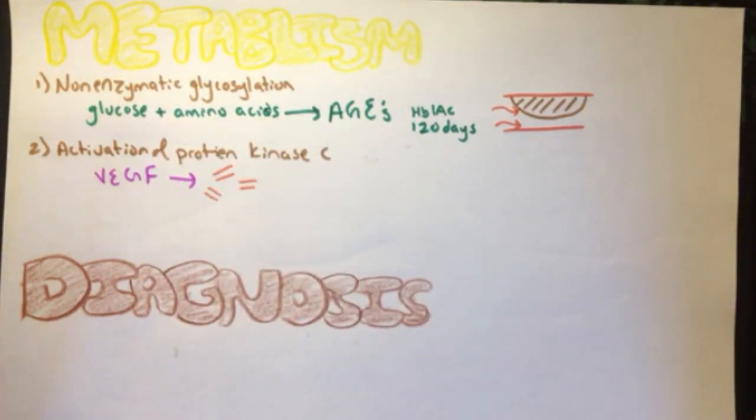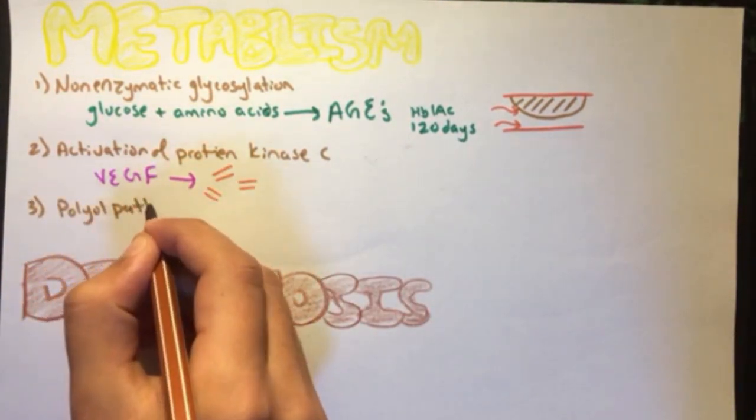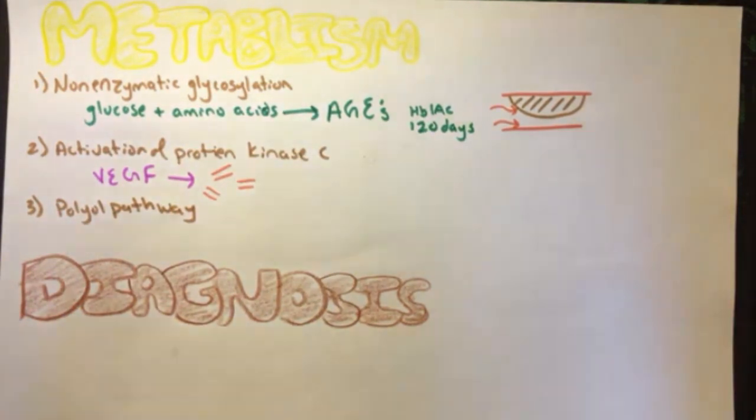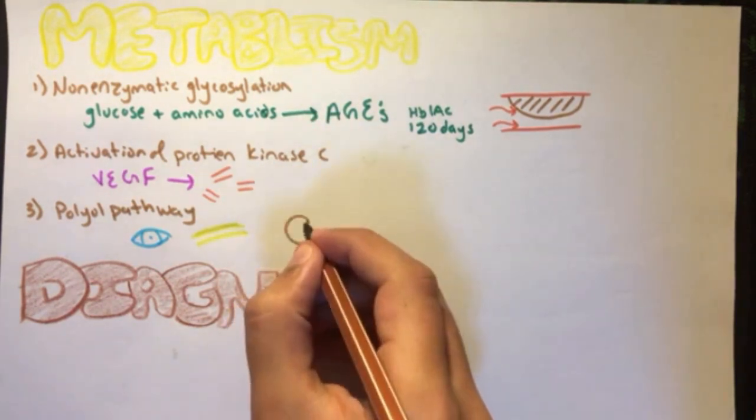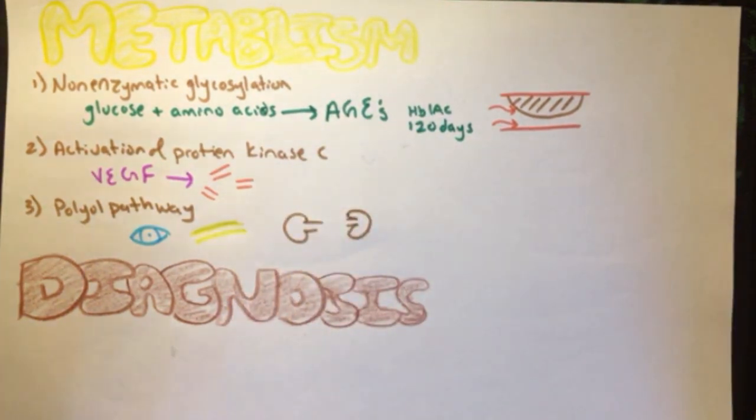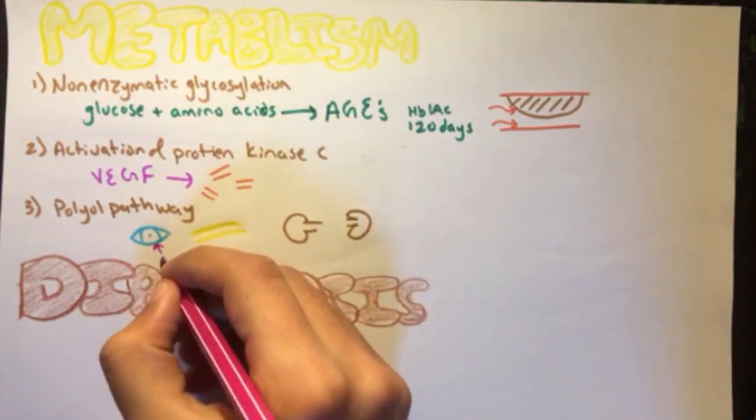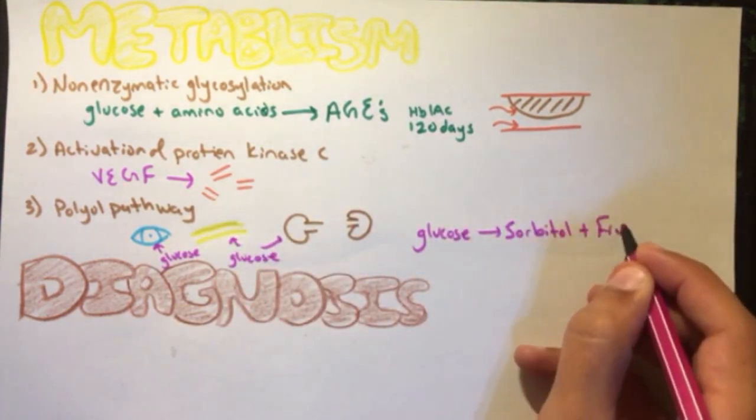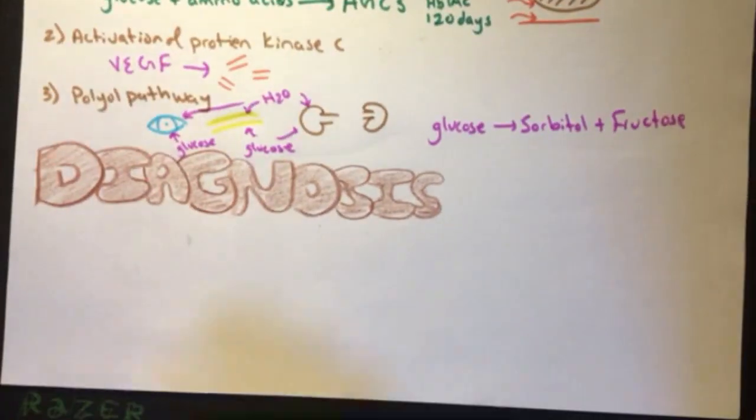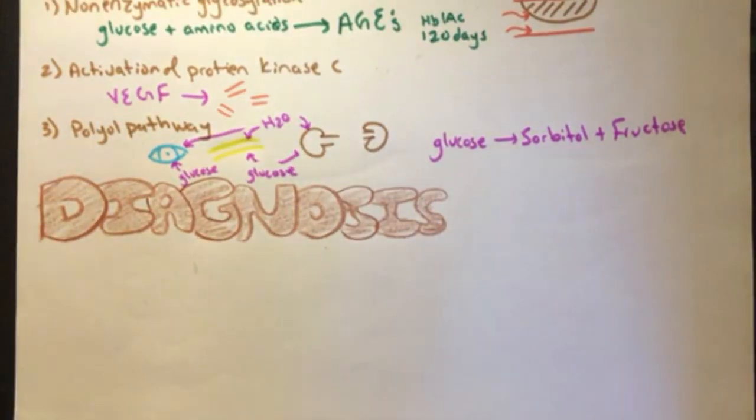The last metabolic reaction is interfering with the polyol pathway. Some tissues like the lens, nerves, kidneys, and blood vessels do not require insulin for glucose transport, so an increase in glucose causes its influx to these tissues where glucose will be transformed to sorbitol and fructose, causing an influx of water that will lead to complications discussed later.